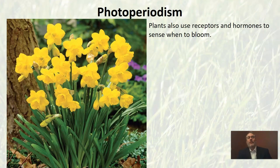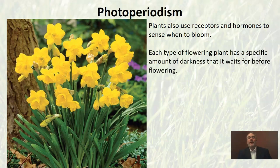Photoperiodism can also be when plants use receptors and hormones to sense when it's time to bloom. If you go outside right now, you're undoubtedly going to find lots of different flowering plants producing flowers. This is part of the life cycle of plants where they produce flowers, which are then pollinated and fertilized, and eventually we end up with a seed. Each different type of plant has a specific amount of darkness that it waits for, which is why you've noticed that different plants flower at different times. For example, daffodils are some of the first things to bloom in the spring — all daffodils bloom at the same time because they're measuring the same amount of darkness, keeping track of those seasonal changes.